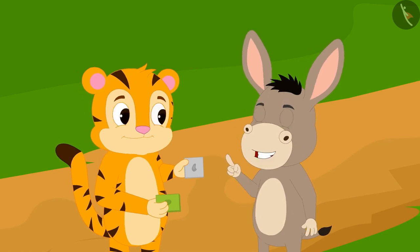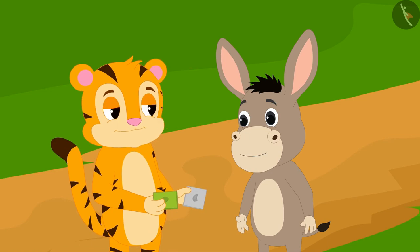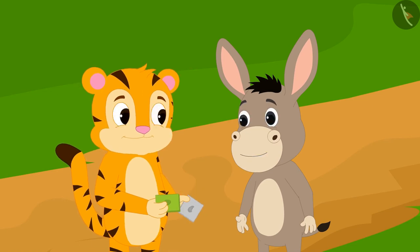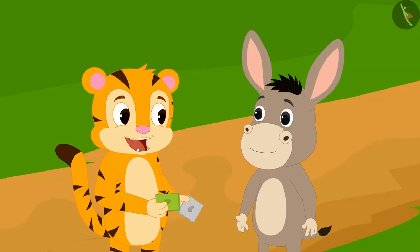Sher Khan, let us divide this cashew barfi and eat it in two equal portions. Bhoola said to Sher Khan. Okay, but I have a condition. We will play a game.